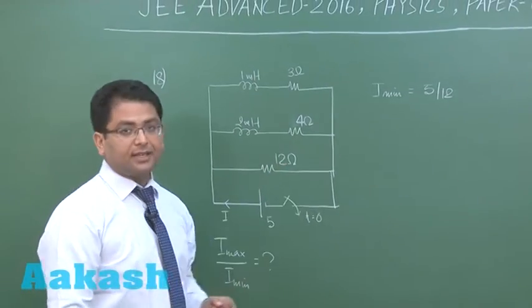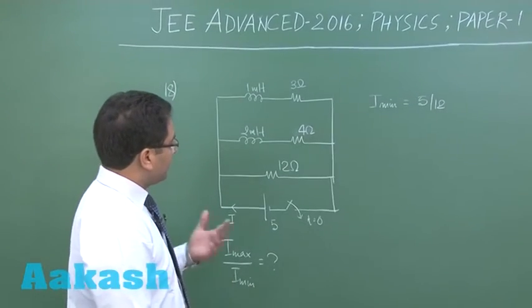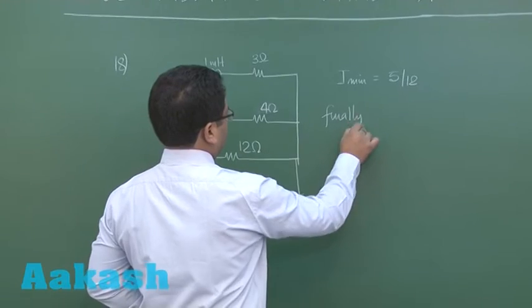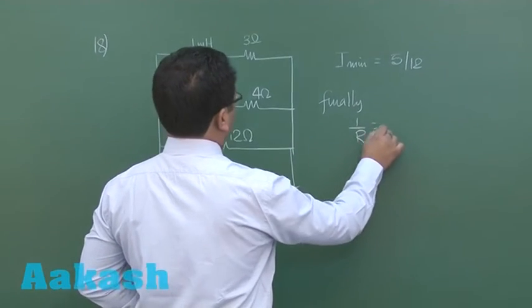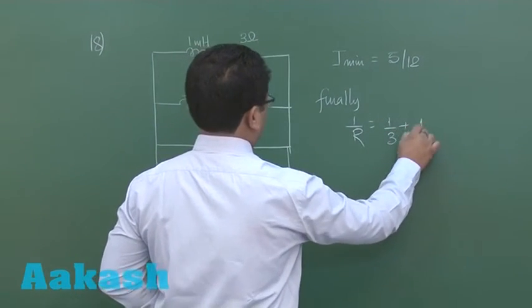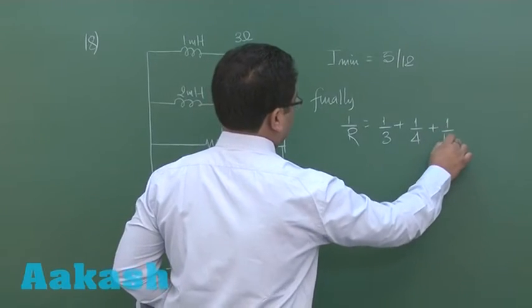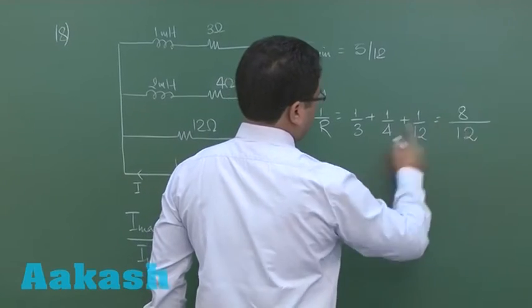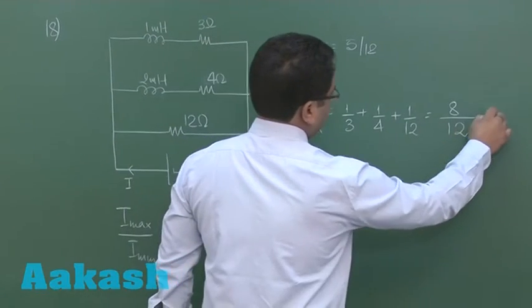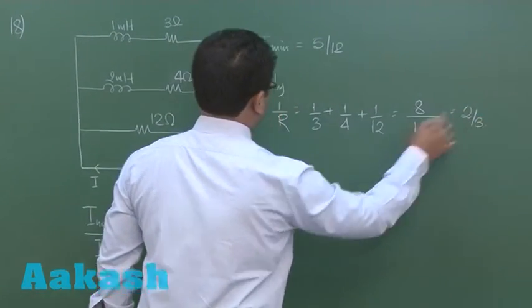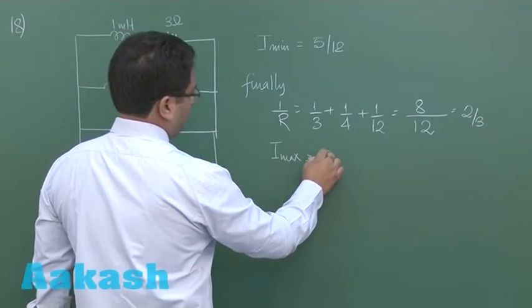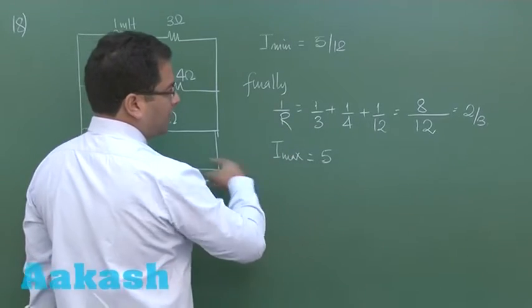At the end, finally, 1 by r would be 1 by 3 plus 1 by 4 plus 1 by 12, and that would be 8 by 12, and that would come out to be 2 by 3. So i_max would be 5 by r, so that would be 5 divided by 2 by 3 and that comes out to be 10 by 3.